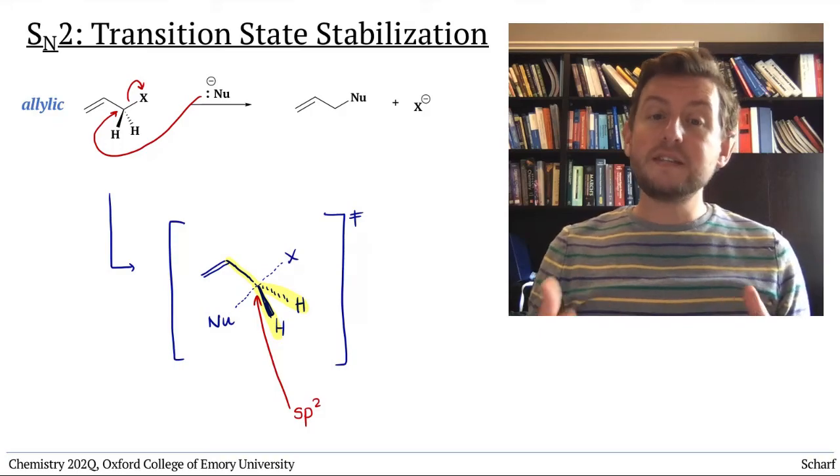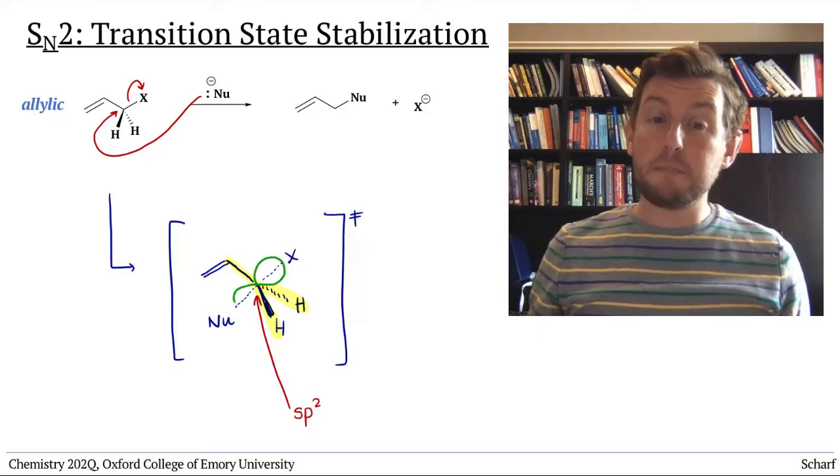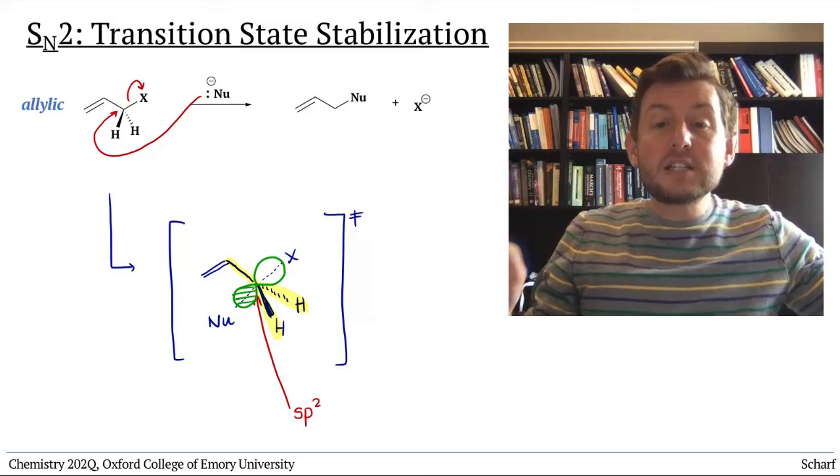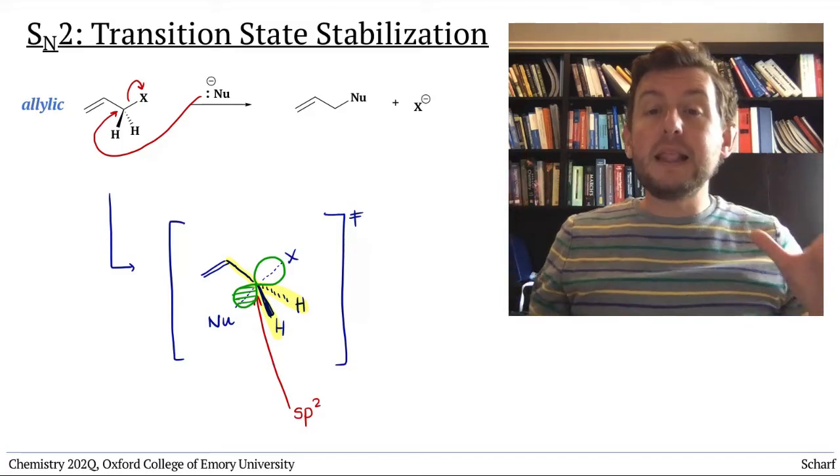Therefore, the central carbon has an unhybridized p orbital for just a split second in the middle of the reaction.